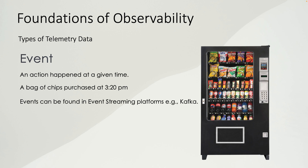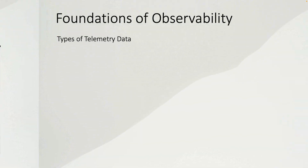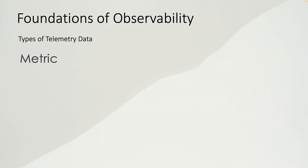Events can normally be found in event streaming platforms such as Apache Kafka, because microservices use events to communicate with each other. However, you can also explicitly generate events for the observability platform. Events basically validate that an expected action has happened.